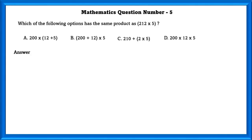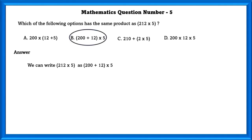Mathematics question number 5. Which of the following options has the same product as 212 into 5? We can write 212 into 5 as (200 + 12) into 5.